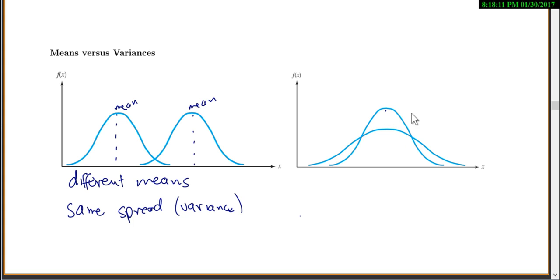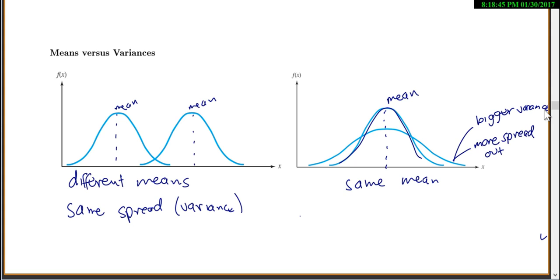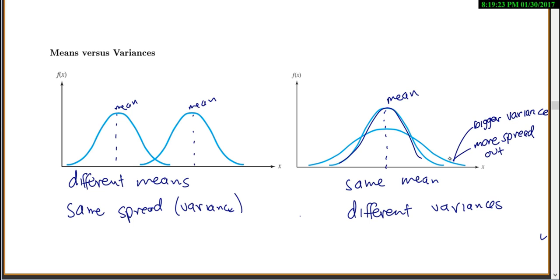In the second example, both distributions seem to be centered about the same place, so they have the same mean. For a symmetric distribution, the mean or expected value is right there in the middle. But this first one is kind of skinny while the second one is a bit fatter and more spread out. So this one has a bigger variance — the one that's fatter and more spread out has the bigger variance.